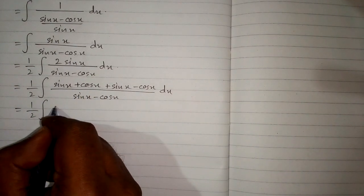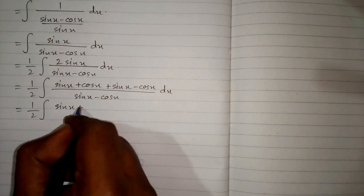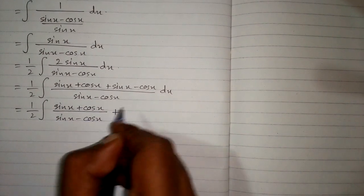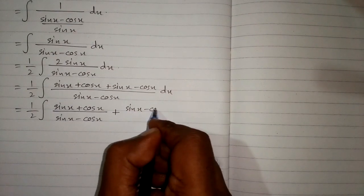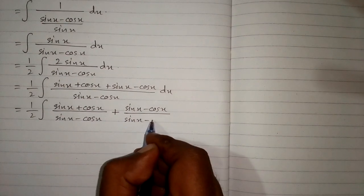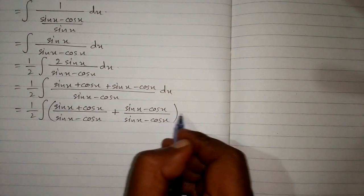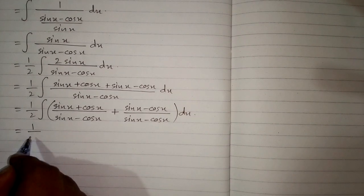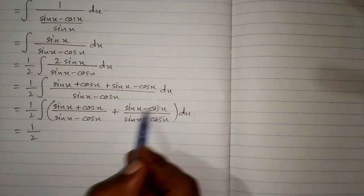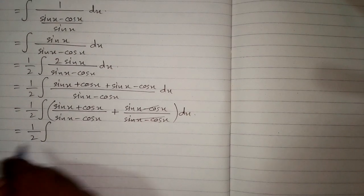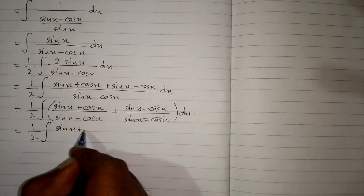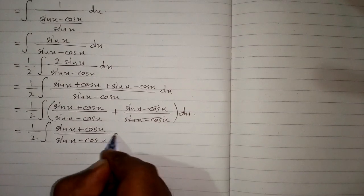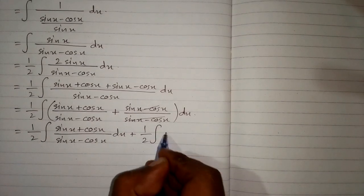Now we can break this fraction into two fractions. So we have sin x plus cos x upon sin x minus cos x, plus sin x minus cos x upon sin x minus cos x. The second fraction simplifies to 1, since the numerator and denominator are the same. So we get one half integral of sin x plus cos x upon sin x minus cos x dx, plus one half integral of dx.